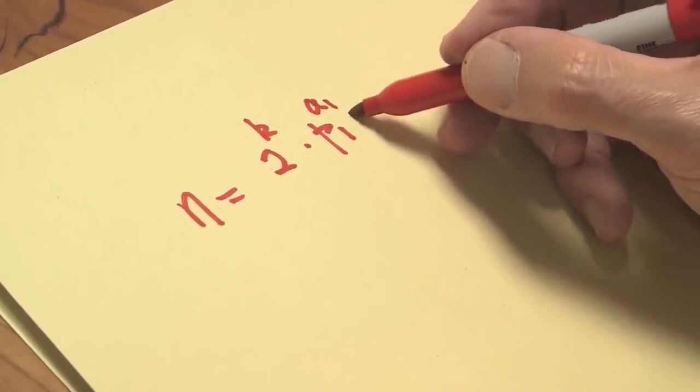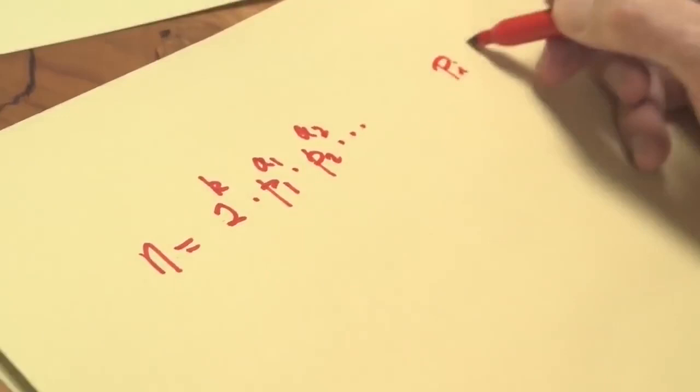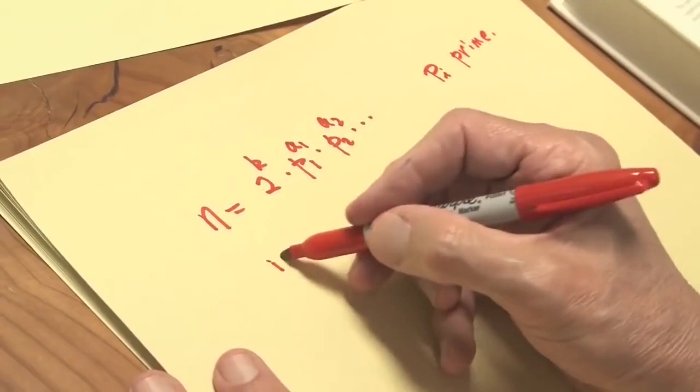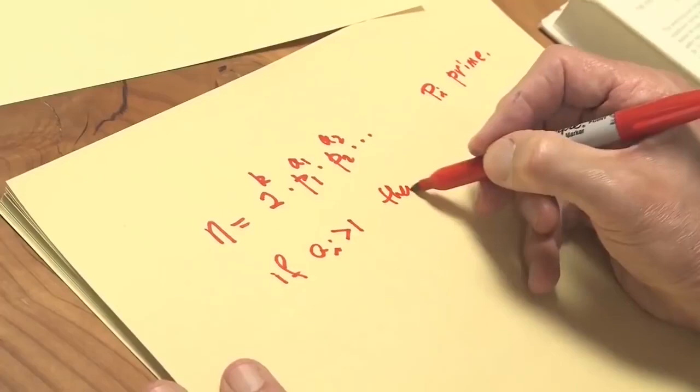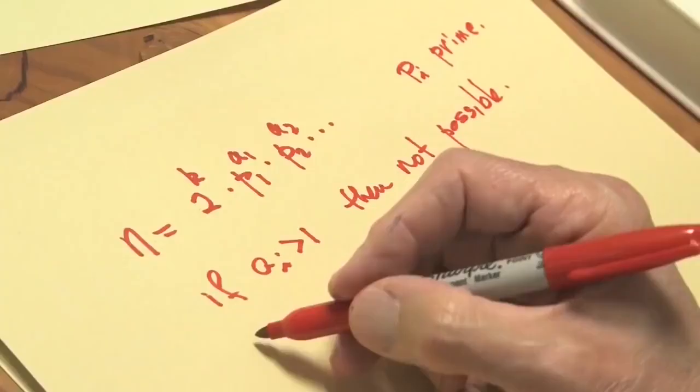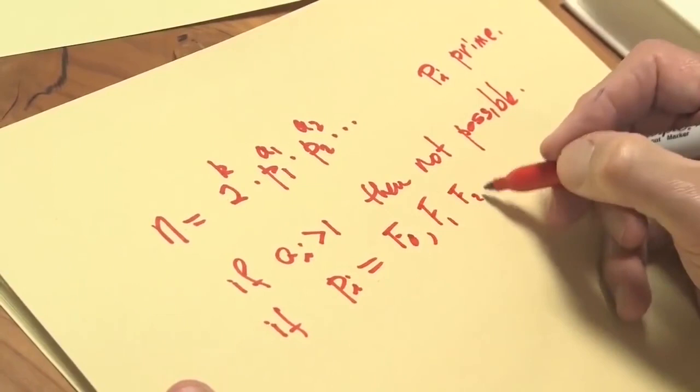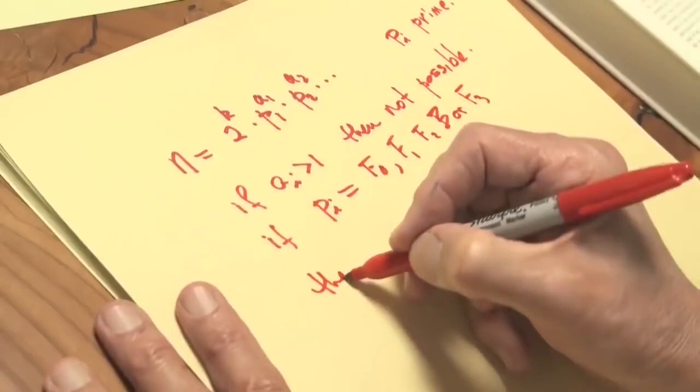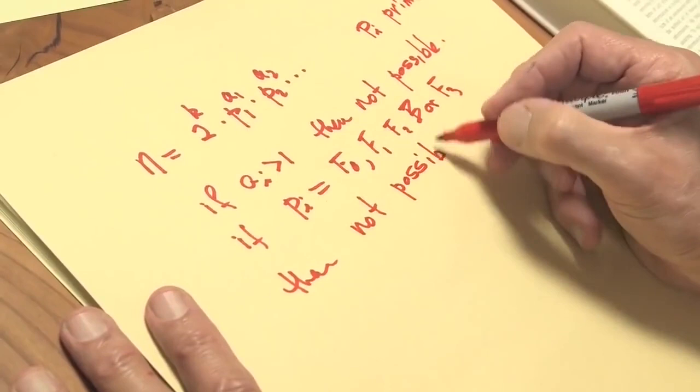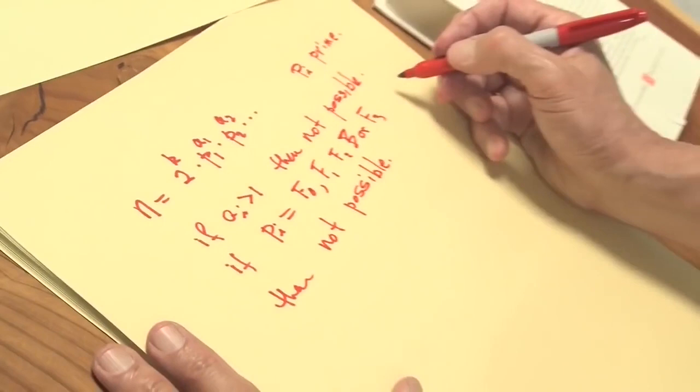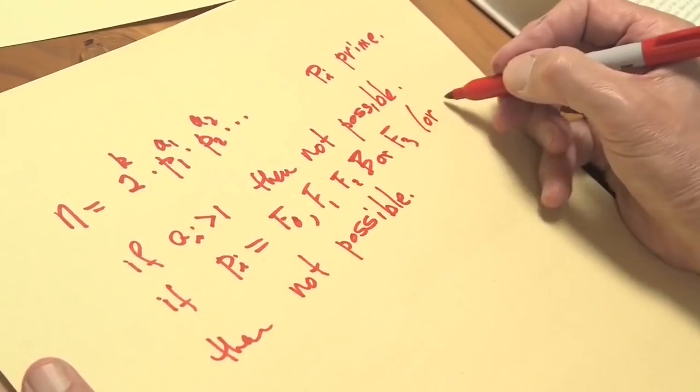And then I look, and I say, if any ai is bigger than 1, then not possible. If any of the pi are not equal to f0, f1, f2, f3, or f4, or other Fermat primes, then it wouldn't be possible. So some of, you don't have to have all the Fermat primes, but you can't have any other primes in the factorization.